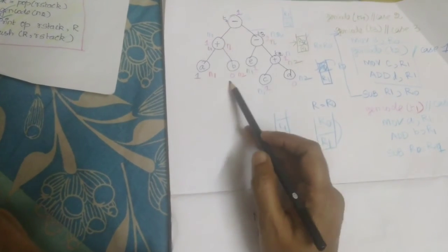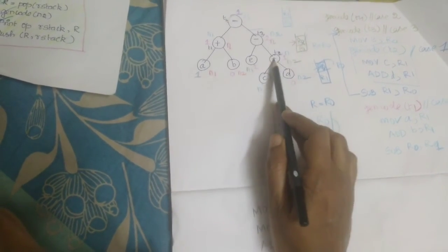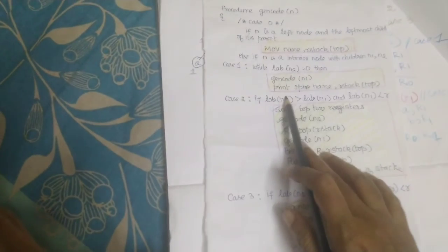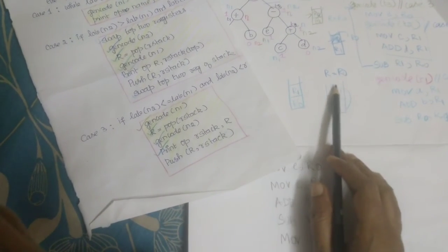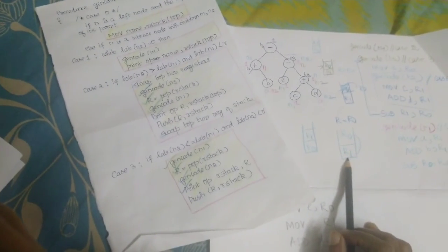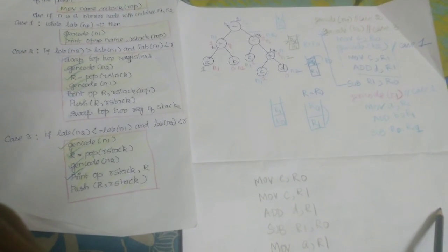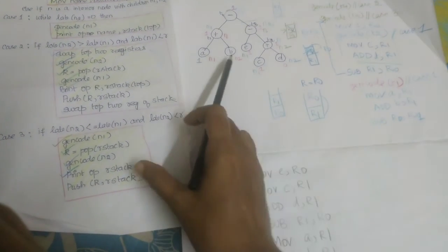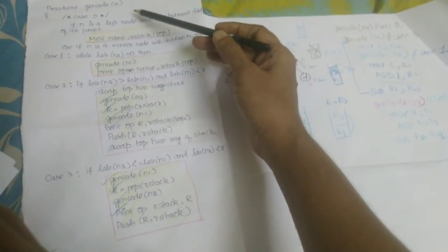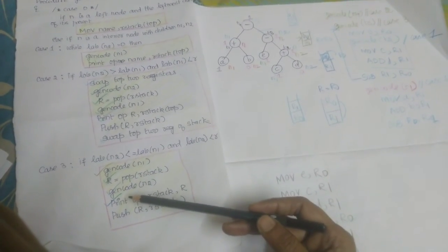We started with the DAG, did the labeling, and with the help of the code generation algorithm we evolved this code. The number of registers needed equals the label that the root is holding. It is very simple and interesting to generate code from a DAG — the only necessity is that you understand all the cases of the algorithm.